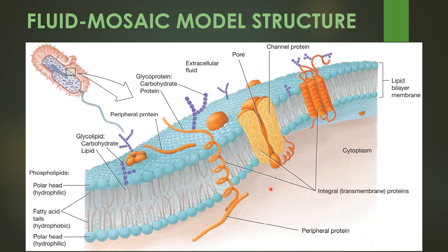One is the integral protein. The integral proteins are also called as transmembrane proteins, which have channel proteins as well as facilitate the transportation of molecules, by which the molecules are easily transported. Another type of protein present in the cell membrane is the peripheral proteins, which are loosely attached to the phospholipid bilayer.